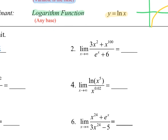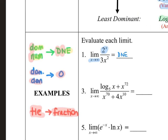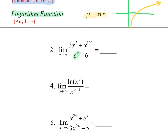In example number two, it's really tempting to see x to the 100 and think that's going to dominate. But keep in mind that an exponential function — this one in the denominator — is going to dominate any sort of power function that it's paired with. So my dominant function is actually the e to the x. Looking back at the dominant term rules, a dominant denominator means the limit is going to equal zero. So my answer to number two is zero.